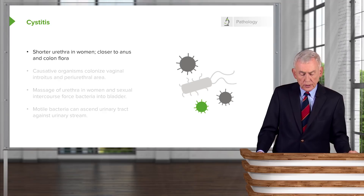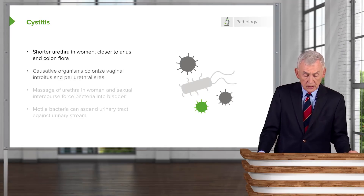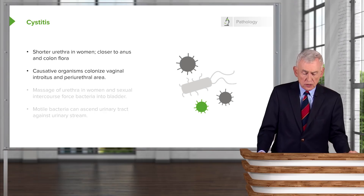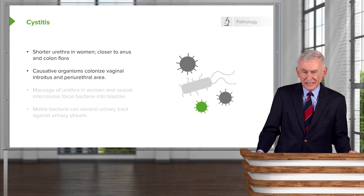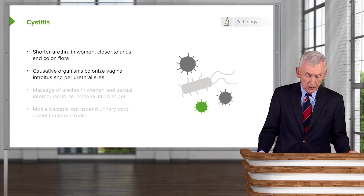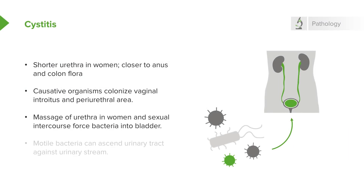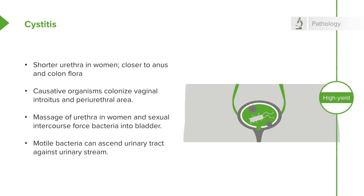The shorter urethra in women is obviously closer to the anus and to colonic flora, so the organisms that cause urinary tract infection colonize the vaginal introitus and periurethral area. When the urethra is massaged — especially by sexual intercourse — those bacteria can be forced into the bladder. Furthermore, if the bacteria are motile, they can actually ascend the urinary tract against the urine stream; most notorious among these is Proteus, which has swarming motility in many species.